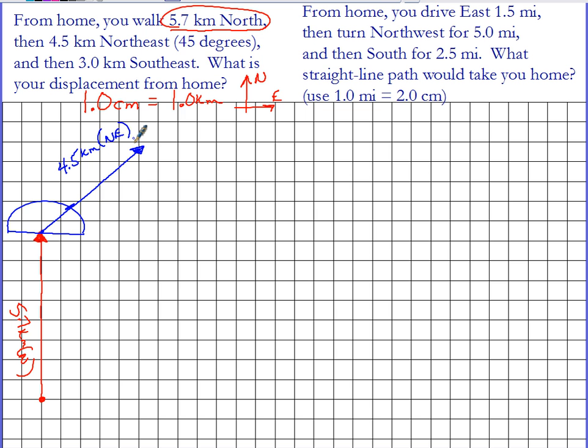And then finally, to draw my 3 kilometer vector southeast, I'm going to take my protractor and sort of turn it upside down here, find the southeast direction, and then draw a 3 kilometer or a 3 centimeter vector this way. Let's call that 3.0 kilometers southeast.